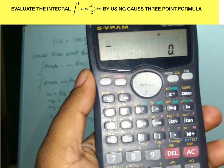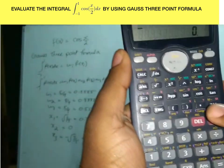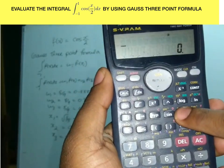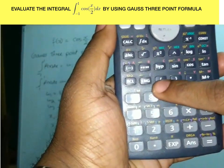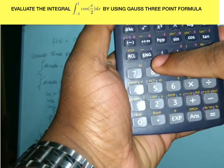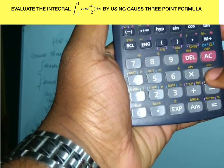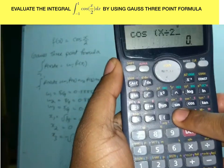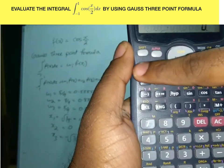Now I've changed to radian mode. Then frame the formula for cos(x/2). That is cos, bracket, alpha x, divide 2. The formula is now framed. Then press the cos button.